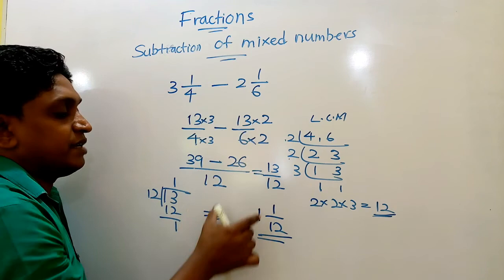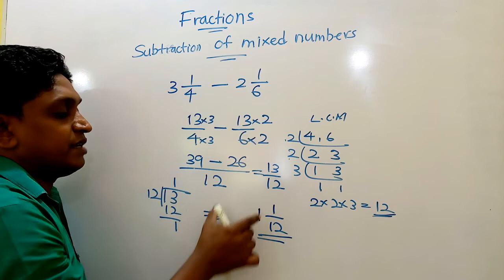So this way, the given mixed numbers can be subtracted by converting them to improper fractional forms. Now you have covered the last part of your chapter 10 related to the fractions you learned all the things there.